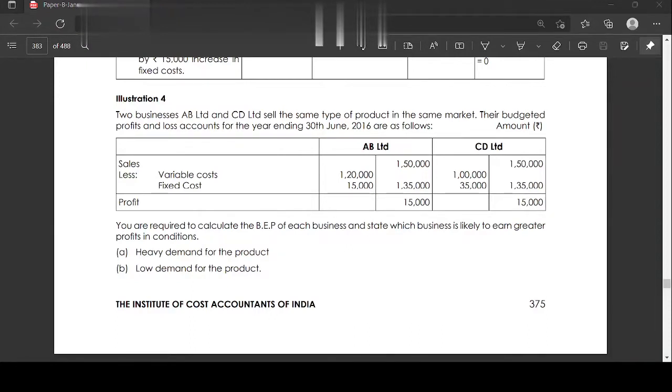Illustration number 4. AB Limited and CD Limited sell the same type of product in the same market. Their budgeted profit and loss accounts for the year ending 30th June 2015 are as follows.